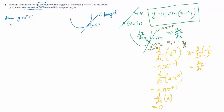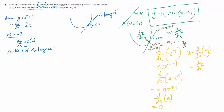The equation of the curve is y equals x squared plus 1. The derivative of y is dy/dx. The derivative of x squared is 2x, and the derivative of 1 is 0. Now we have to find the gradient at the point (2, 5), so x equals 2. Therefore, dy/dx is 2 times 2, which is 4.